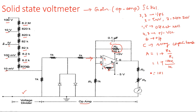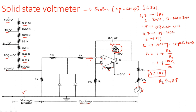If R2 increases — say to 200 kilohms — the gain becomes 201; at 500 kilohms, it becomes 501. So as R2 increases, the gain increases. R2's importance is to improve the gain of the operational amplifier. R4 is a variable resistor connected in front of the meter and is adjusted to get maximum deflection during an experiment.